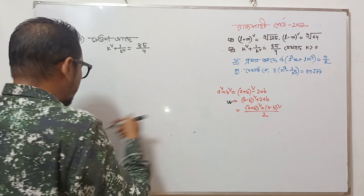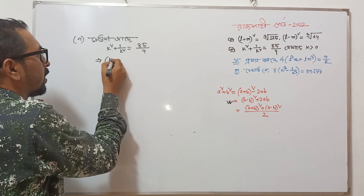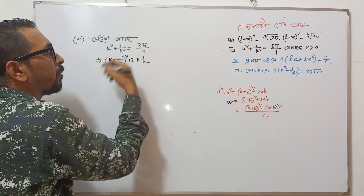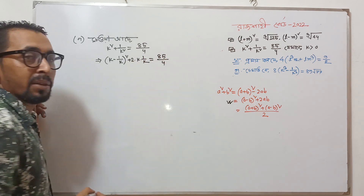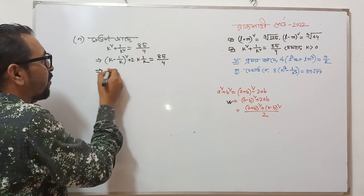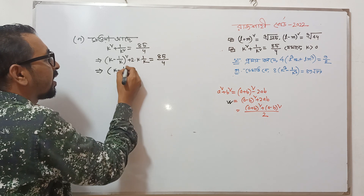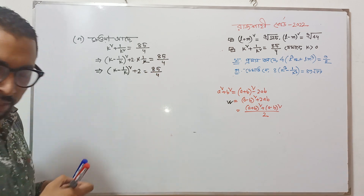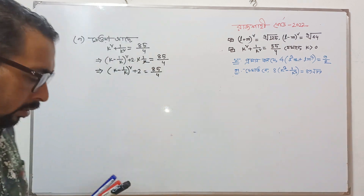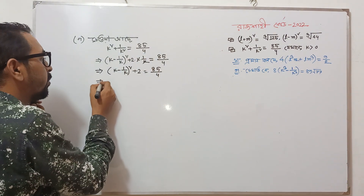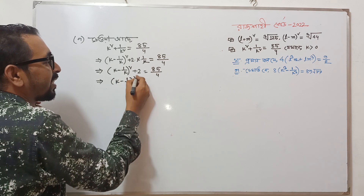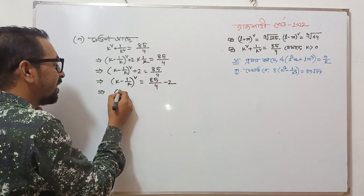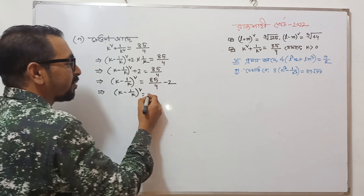We write: k minus 1 by k whole square plus 2 equal to 85 divided 4. The next line: k minus 1 by k whole square equal to 85 divided 4 minus 2, which gives k minus 1 divided k whole square equal to 77 divided 4.